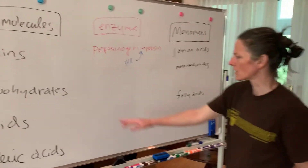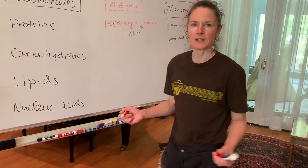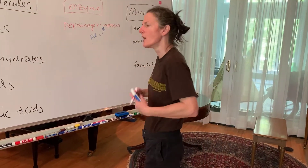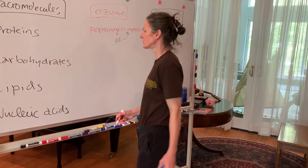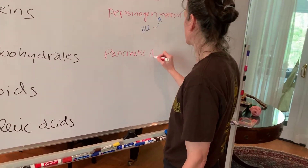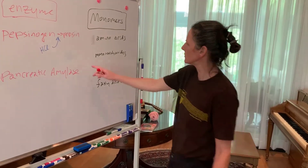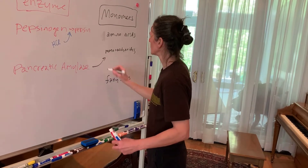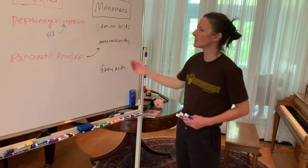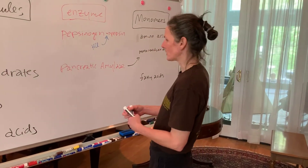For carbohydrates, we use amylases. We have lingual amylase, salivary amylase produced in the mouth, and pancreatic amylase produced in the pancreas. For this lab we will be using pancreatic amylase, which will take starches and turn them into smaller polysaccharides down to monosaccharides — simple sugars.